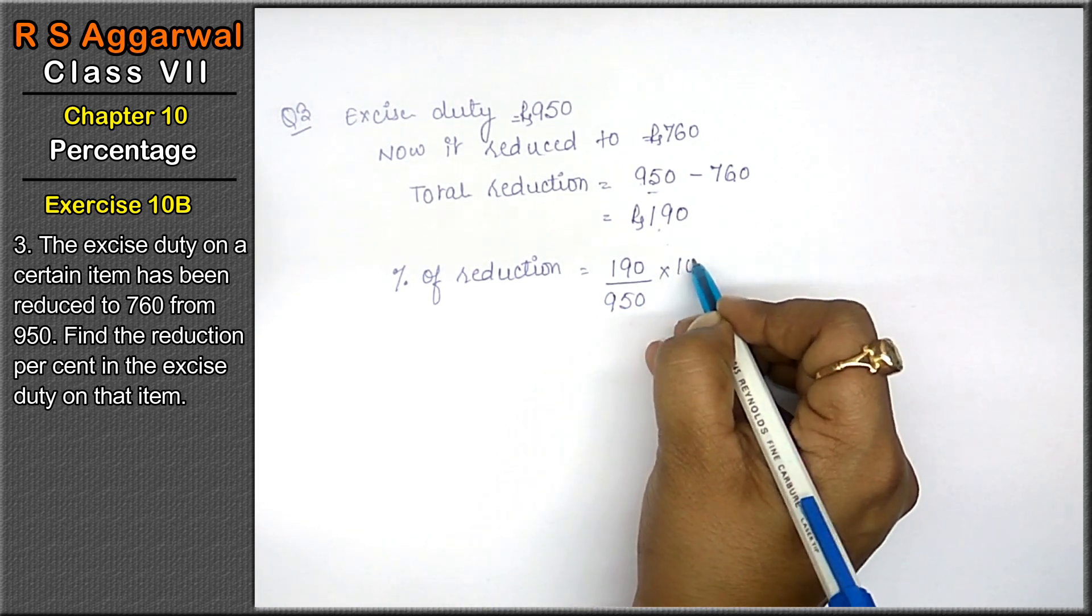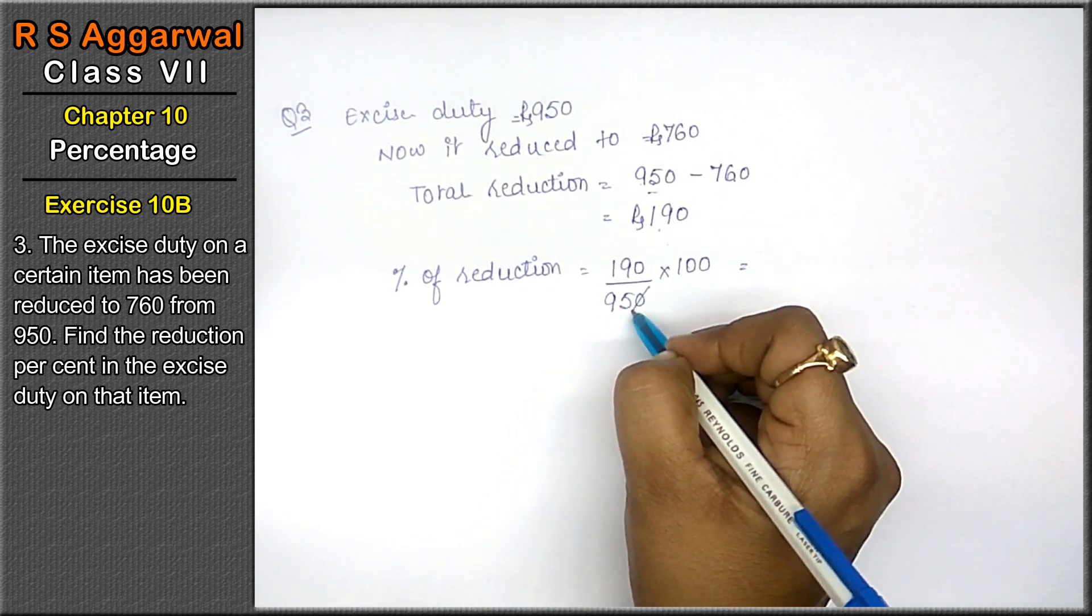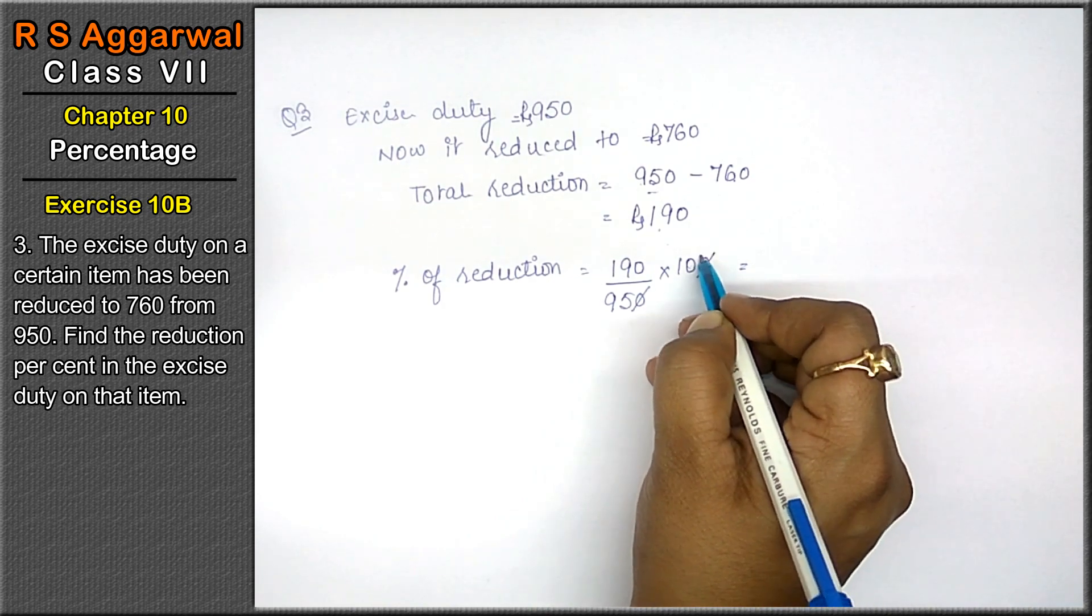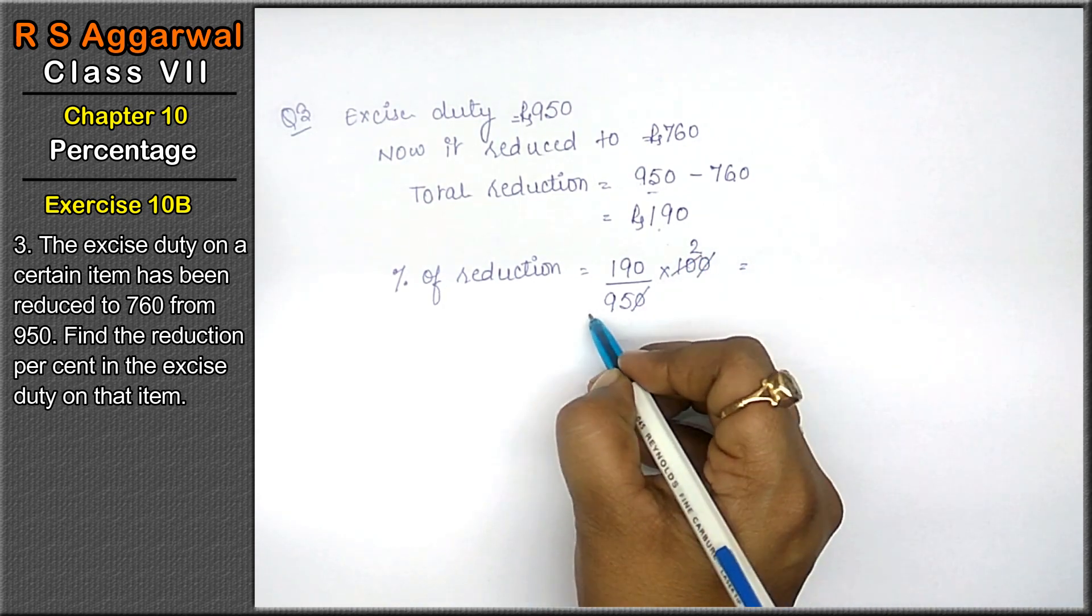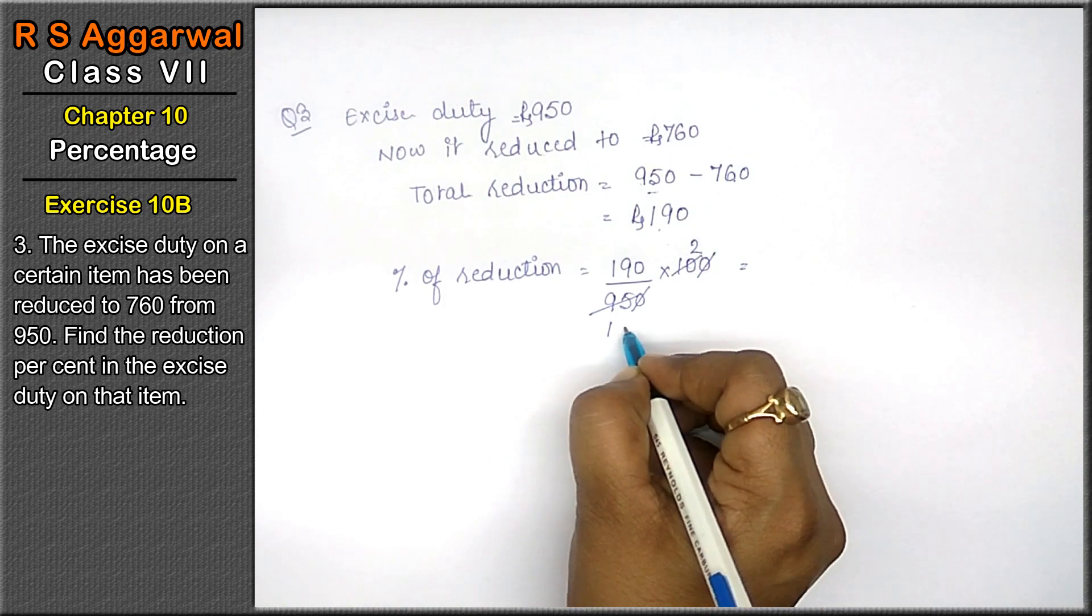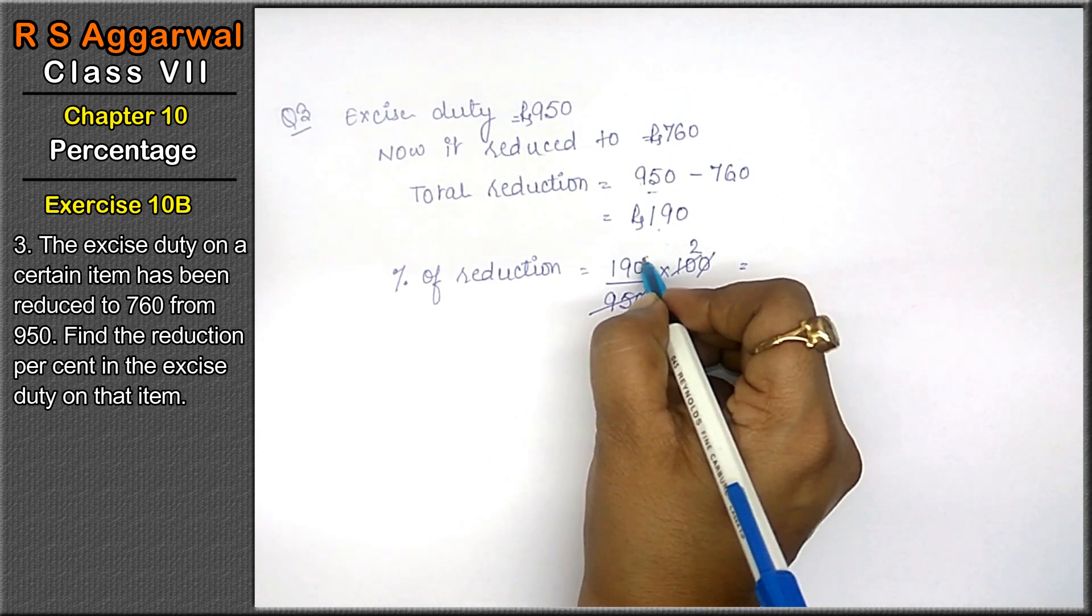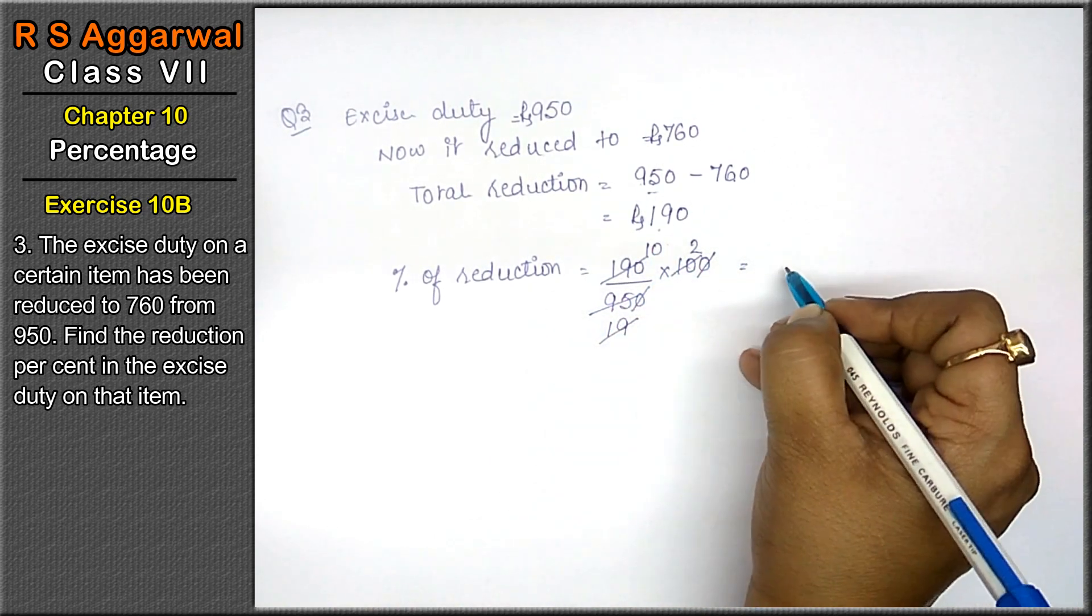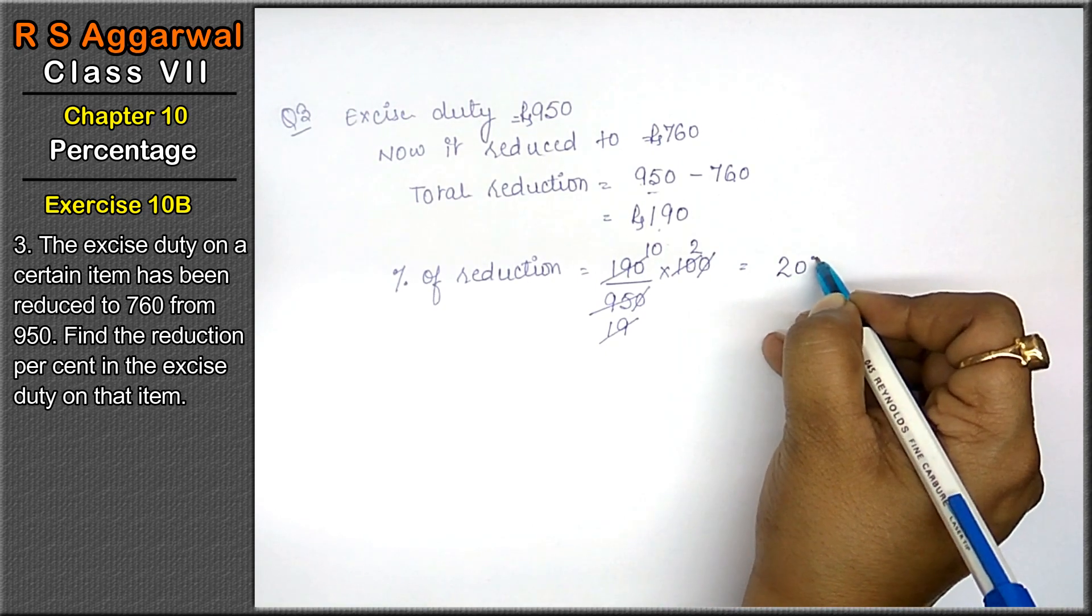In 100, for calculating the percentage, we multiply by 100. 5 times 2 is 10, 5 times 1 is 5, 5 times 9 is 45, 19 times 1 is 19, 19 times 10 is 190. The answer is 20%.